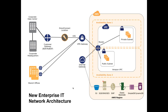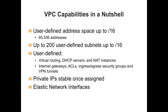What are some of the capabilities of VPC? You get user-defined address spaces — a slash 16, which is over 65,000 possible addresses you can use within the VPC space. You can create up to 200 user-defined subnets within VPC. Inside VPC subnets, you get a lot of control. You can set up virtual routing through a virtual router that's instantiated within the VPC environment, and a DHCP server in which you can configure the different types of IP address ranges you want to make available.